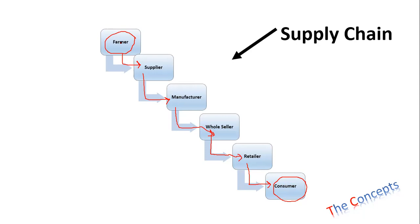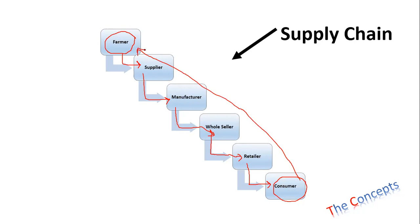All of these — starting from the farmer to supplier to manufacturer to wholesaler and retailer — are buying things for the purpose of business. The farmer sells something to the supplier and makes money, then the supplier sells to the manufacturer, and the same applies to the wholesaler and the retailer. The retailer then makes some money and sells it to the consumer. This chain of units or organizations is known as the supply chain.